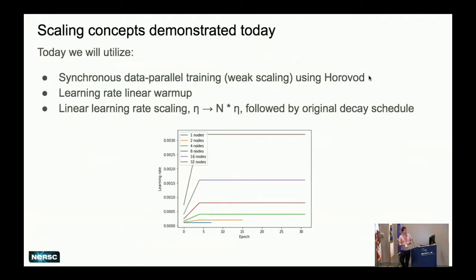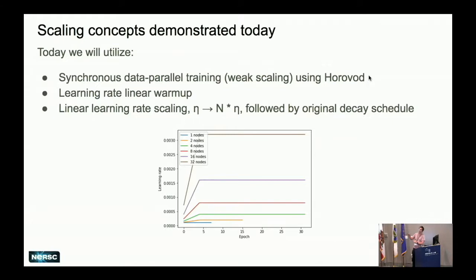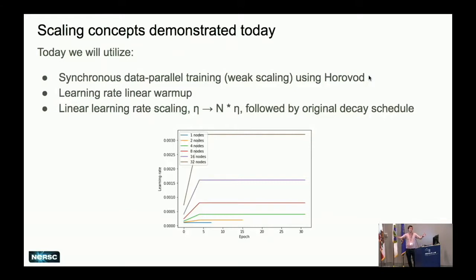This example code won't show you all the cutting-edge stuff Torsten talked about — adaptive batch size and large-scale convergence tricks — but it has the basic stuff that works for a reasonable scale for many problems. Specifically, we use synchronous data parallel training with weak scaling of the batch size. If you have a single-node batch size of 32, as you scale up to multiple nodes, we keep the local batch size fixed at 32, so with 10 nodes the global batch size becomes 32 times 10.